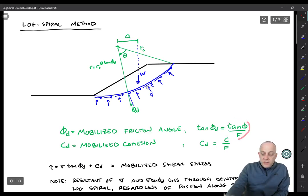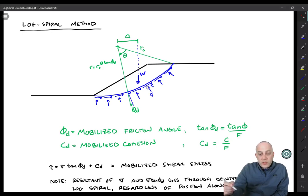The tangent of phi d is equal to tangent of phi over F and then c sub d is just equal to c over F where phi and c are the Mohr-Coulomb strength parameters.